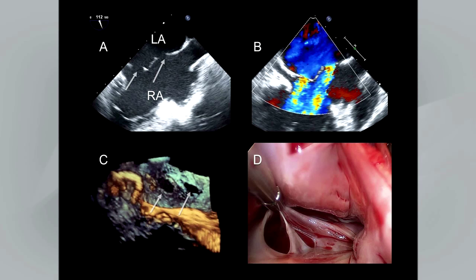3D echo also allows quick recognition of multiple defects. This patient has a multi-fenestrated interatrial septum — an atrial septal aneurysm with multiple communications, Swiss cheese if you will. On 2D imaging we can see multiple defects and multiple color Doppler jets from left to right. When we process the 3D images, we see the interatrial septum with multiple defects — exactly what was seen when the patient went for minimally invasive surgery to close these defects. A mobile Chiari network is also nicely demonstrated.